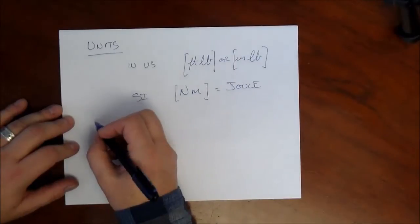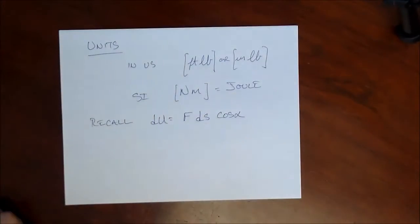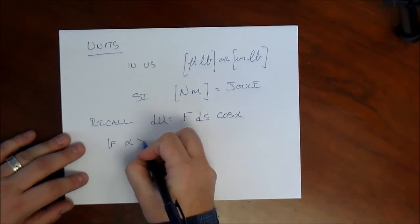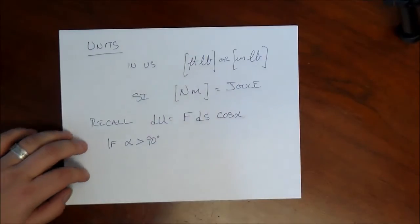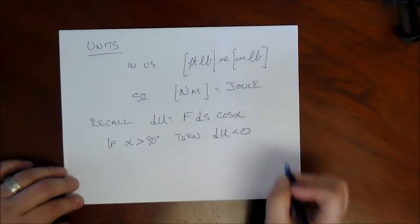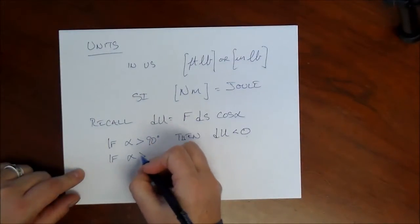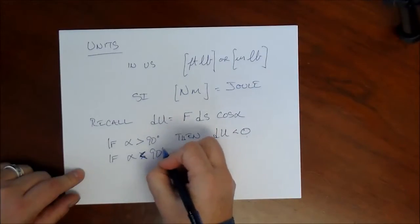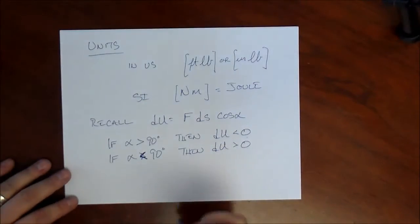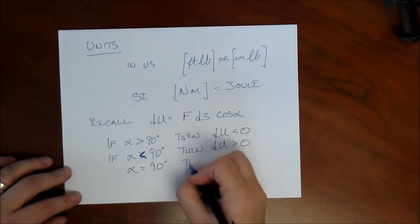Back to our expression for work done: if the angle alpha is greater than 90 degrees, then du will be less than zero — the work will be negative. If alpha is less than 90 degrees, then the work is positive. And if alpha is equal to 90 degrees, the cosine term is zero and the work is zero.